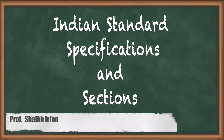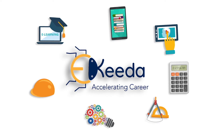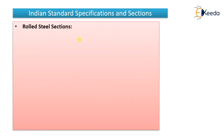In this video we are going to see Indian standard specifications and the various sections available in design of steel structures. As mentioned in previous videos, the Indian standard sections we are going to use are known as rolled steel sections, as they are cast in factories and transported to the site. They are also known as hot rolled steel sections.